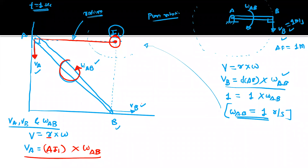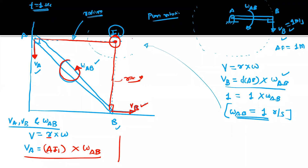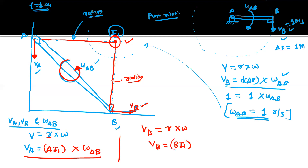The second relation is for velocity VB. VB is the linear velocity and the perpendicular distance BI1 becomes the radius with I1 as the center of rotation. So we write VB = BI1 × Omega_AB. If the initial velocity VA is known, we can find Omega_AB and velocity VB. All three quantities VA, VB, and Omega_AB are dependent on each other.